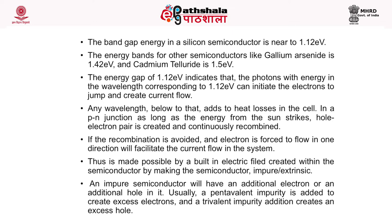Any wavelength below that adds to heat losses in the cell. In a p-n junction, as long as energy from the sun strikes it, electron-hole pairs are created and continuously recombined. If recombination is avoided and electrons are forced to flow in one direction, it facilitates current flow. This is made possible by a built-in electric field created within the semiconductor by making the semiconductor impure or extrinsic.